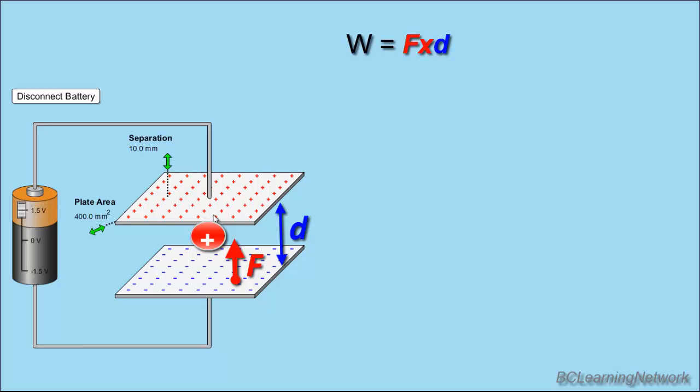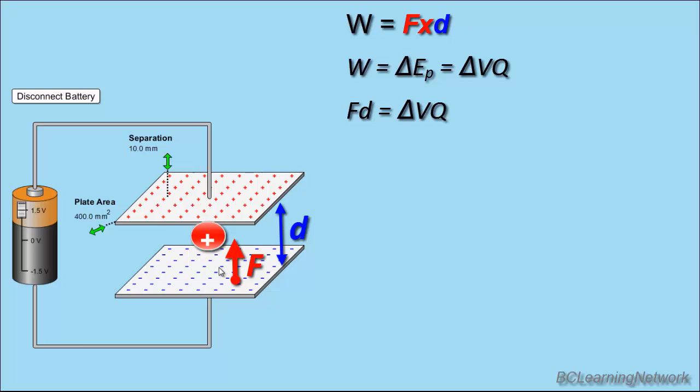Now, what we're doing when we're changing that location of that charge is changing its potential energy. And, since work is change in energy, the work done will go into changing its potential energy. And, we know that potential energy can be calculated by using voltage, or you're changing voltage times Q. So, our force times distance, our work, is equal to V times Q, or change in voltage times Q.